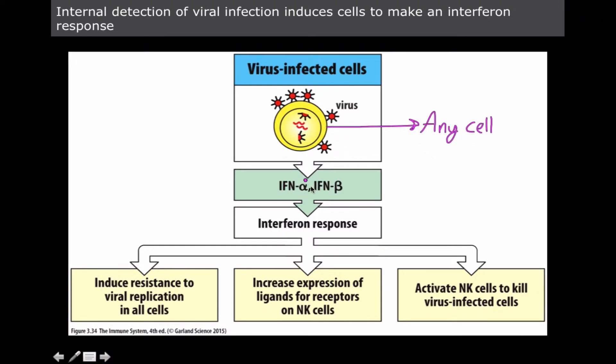This is going to cause the production of interferon alpha and interferon beta, which collectively make up the interferon response, where we have resistance to viral replication in all of our cells, including the infected ones. We're going to increase expression of ligands for receptors on natural killer cells so they can come by and kill us before this starts spreading.